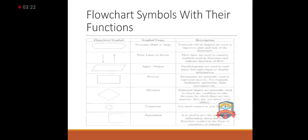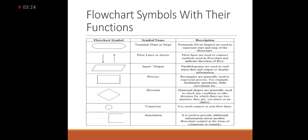Have a look on symbols of flowchart. Number one: terminal start or stop. Terminal oval shapes are used to represent start and stop of the flowchart. It means when we start the program, the oval shape will be placed, and when we end the program, the oval shape will be placed. Flow lines are arrows which show the direction of the program where it moves.